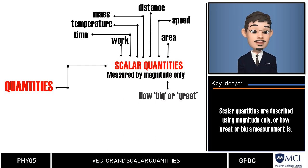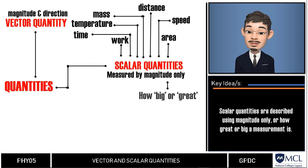The other type of quantity is called a vector quantity. Unlike a scalar quantity, vector quantities have both magnitude, or how great the measurement is, and direction where the magnitude is going. But let us have those later in this video.